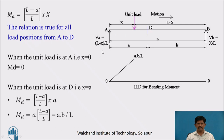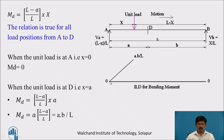When the unit load is exactly at A, that is X = 0, the bending moment at D is 0. When the unit load is exactly at point D, Md = [(L−A)/L] × A. Since L−A = B, this gives Md = AB/L. So the bending moment varies from 0 to AB/L as the unit load moves from A to D.